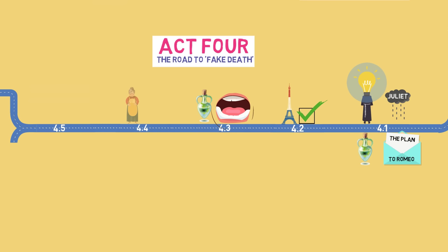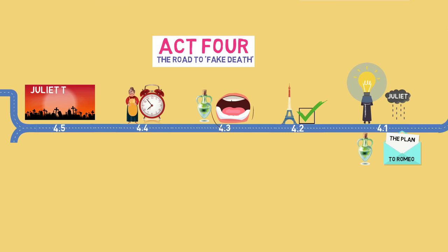On Thursday morning, a happy Capulet sends the nurse to wake Juliet so she can marry. The nurse then discovers Juliet, thinks that she's dead, and so the family sends her body to the family tomb. She's not buried, so when she wakes up she can escape. The plan seems to be working.